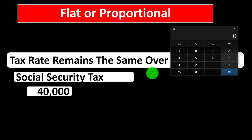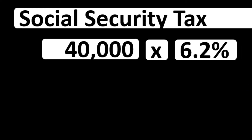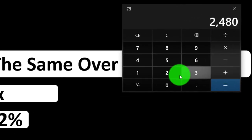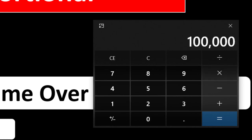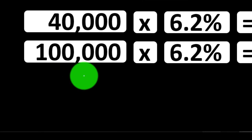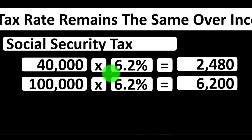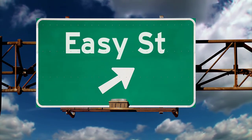On payroll taxes — when you look at your W-2 — the employee side is generally 6.2 percent up to a certain level of income. So $40,000 × 0.062 = $2,480, and $100,000 × 0.062 = $6,200. The person earning $100,000 pays more than the person earning $40,000, even though they have the same rate. We don't have a progressive rate — the same rate is being applied.